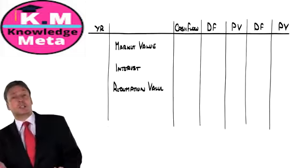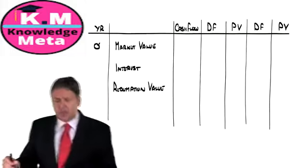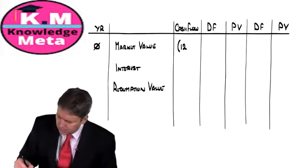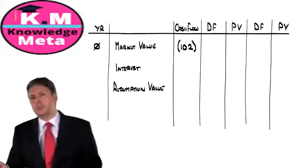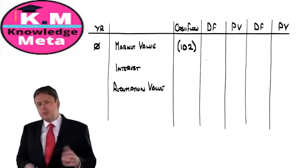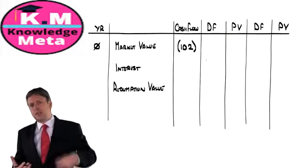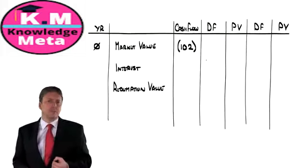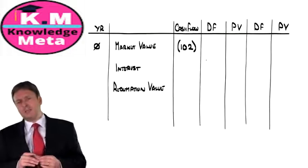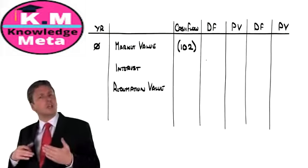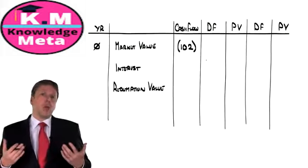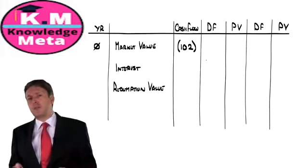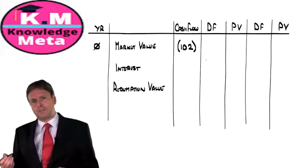In year zero, that's our market value. We are told we had debt worth £102. This may confuse, but the way we always do these calculations is to make the market value today an outflow and the interest and redemption value an inflow. We're effectively looking at it from the debt holder's perspective, and the reason we do it that way is because it makes it easier to interpret the results.